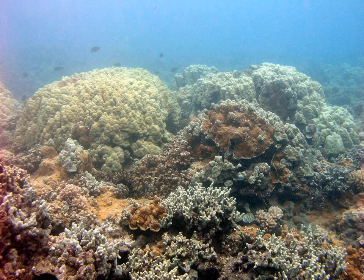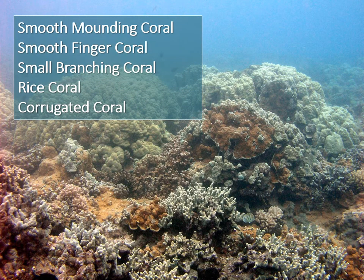What about this shallow reef at Honanao Bay on Hawaii Island? Which coral types are present? This image includes five coral types: small branching coral in the lower right, smooth finger coral in the foreground, smooth mounding coral in the background, and both rice coral and corrugated coral with encrusting morphologies found in the center of the image. Great job if you recognized all five.